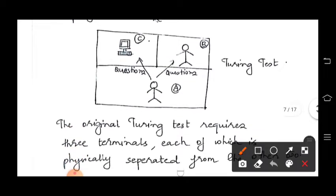What is the Turing Test used for? It is used for finding out whether a system has artificial intelligence. If a computer passes this test, we can say that it has artificial intelligence.